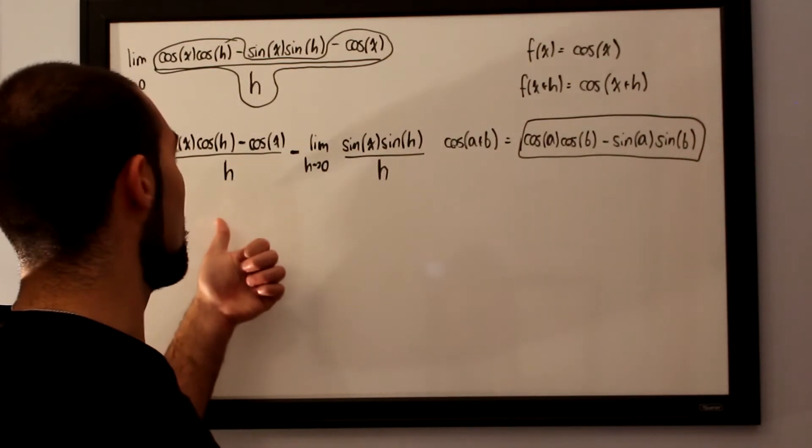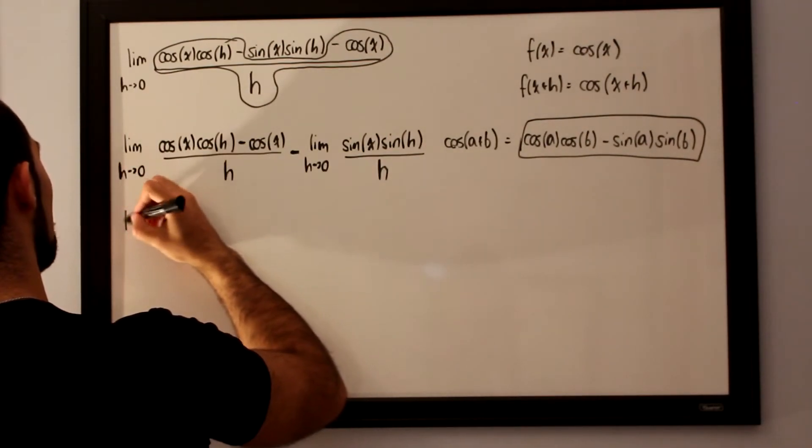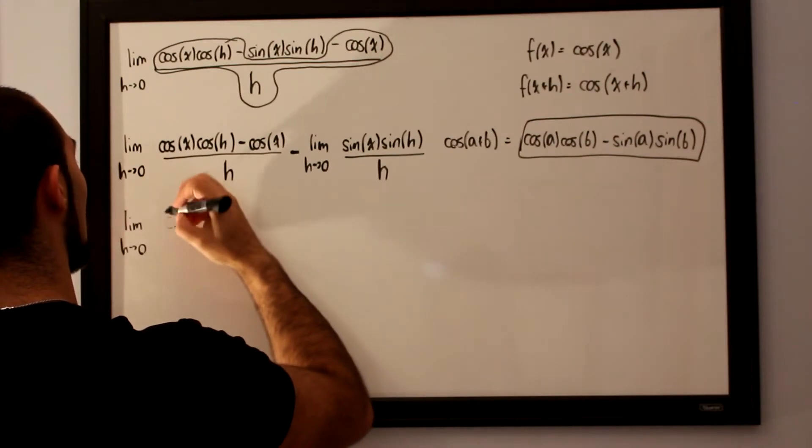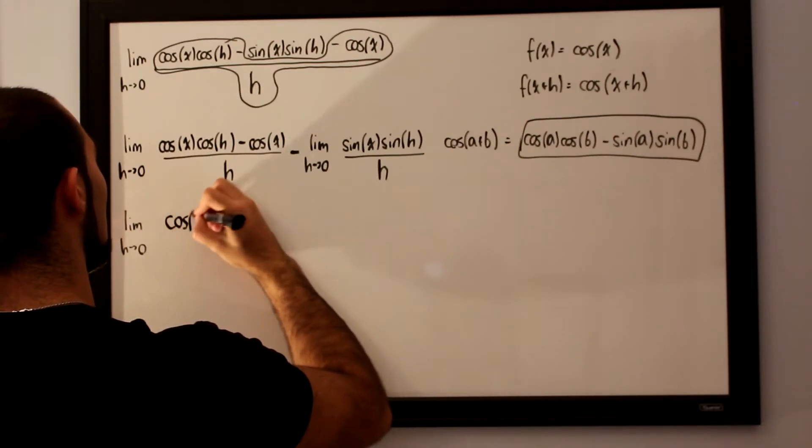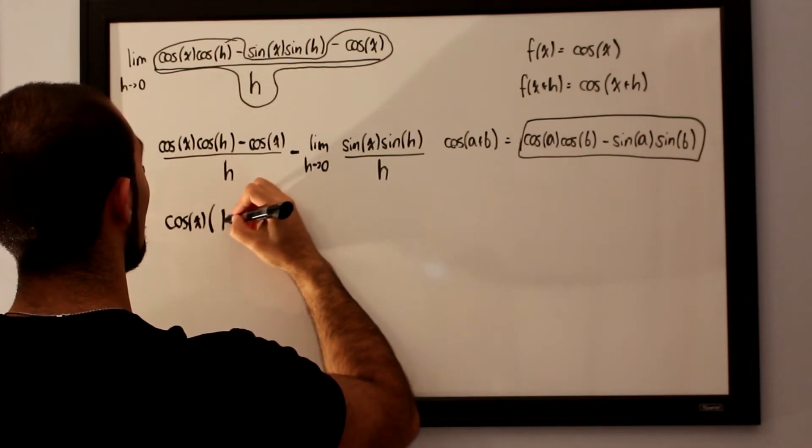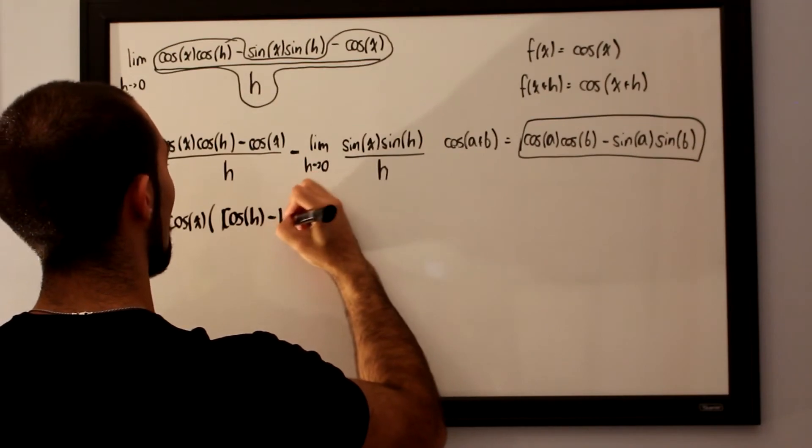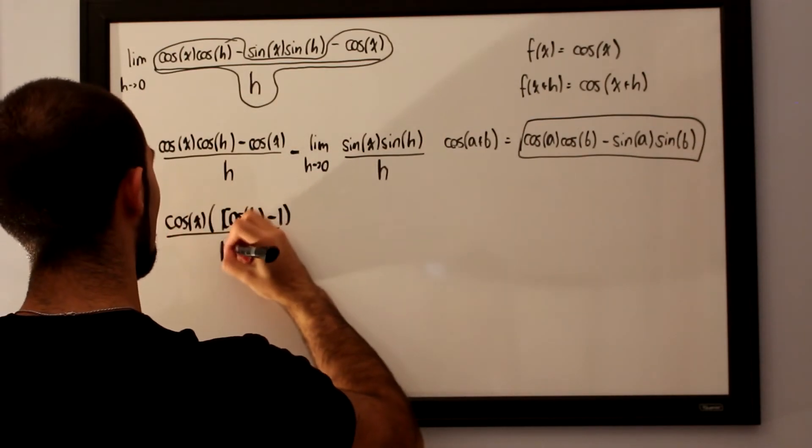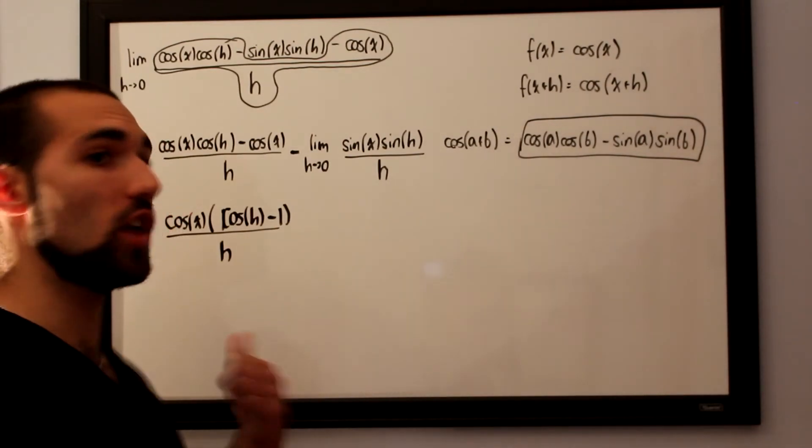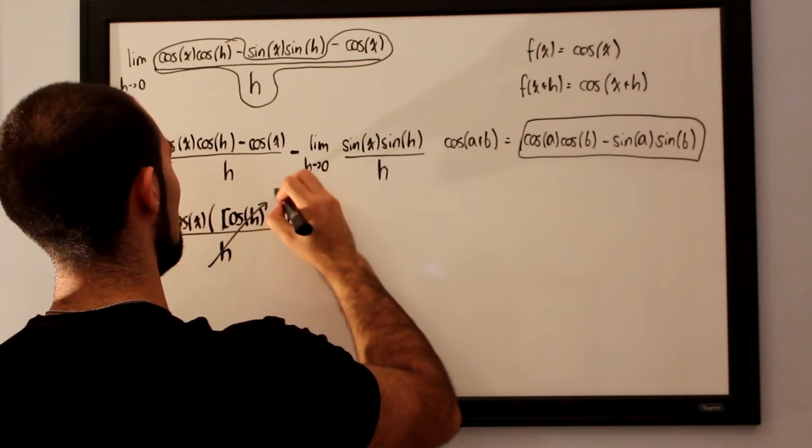So if we were to factor a cosine of x out of this limit, what we would be left with is the limit as h approaches 0 for cosine of x times cosine of h, minus 1, over h. Just as we did in the previous one, cosine of h, minus 1, over h, as h approaches 0, we can assume that this will go straight to 0.